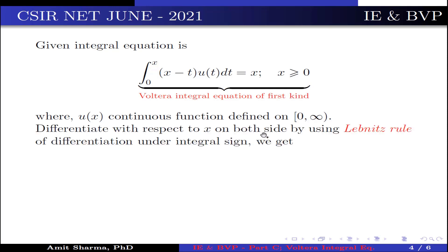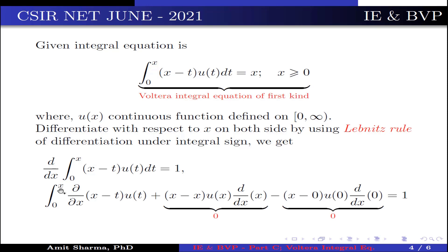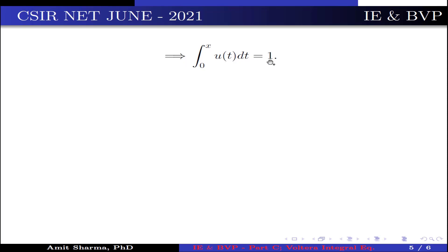Now differentiate with respect to x on both sides using the Leibniz rule of differentiation under the integral sign. We get d/dx of ∫[0 to x] (x − t)·u(t) dt = 1, which expands to ∫[0 to x] ∂/∂x(x − t)·u(t) dt + (x − x)·u(x)·(dx/dx) − (x − 0)·u(0)·0 = 1. The substitution terms vanish since (x − x) = 0 and the derivative of 0 is 0, giving ∫[0 to x] u(t) dt = 1.